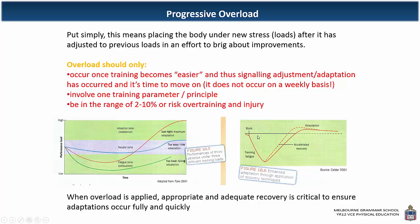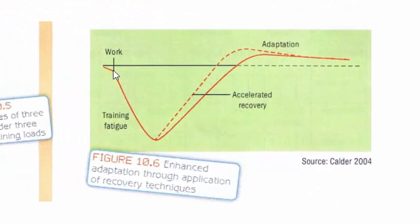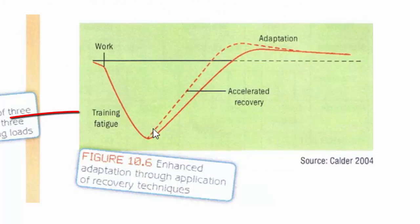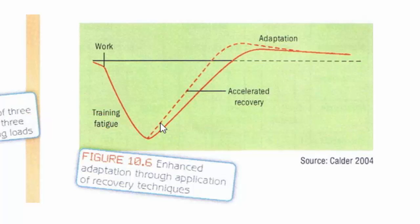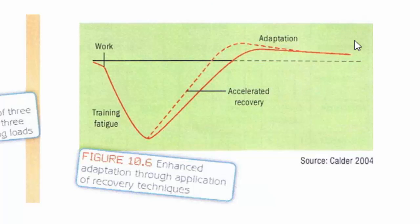When you undertake work, your body breaks down — it's called a catabolic effect — and then it builds back up to cope with the stress, making an adaptation. You should apply the progressive overload at that peak of adaptation so that the body again experiences fatigue and then builds up even higher. That's the concept of progressive overload for adaptation.